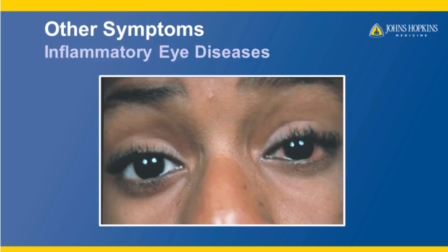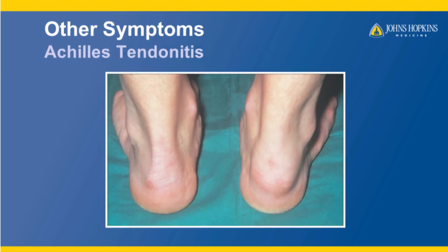Another symptom of psoriatic arthritis can be inflammatory eye diseases. As you see in this picture, there is redness and irritation in the eye indicated by the arrow. Tendinitis, or enthesitis, is another symptom of psoriatic arthritis. What we see in this picture is an angry tendinitis in the Achilles tendon of this heel. Notice how swollen it is compared to the other heel.